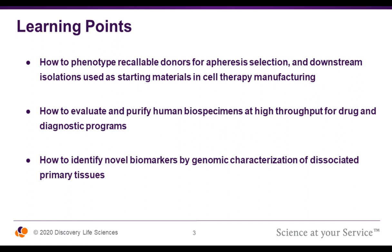For today's webinar, we're going to focus on three main learning points. The first is how we phenotype our apheresis donors and how we use this information for determining potential donors for downstream cell therapy manufacturing and cell isolations. The last two learning points will focus on our dissociated tumor cell offering — how we use flow cytometry to characterize these samples and identify them for different downstream platforms, and how we use single-cell genomic technologies to identify novel biomarkers in dissociated tumor cells.